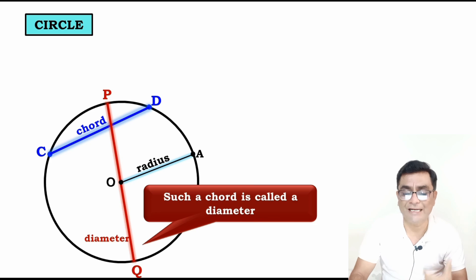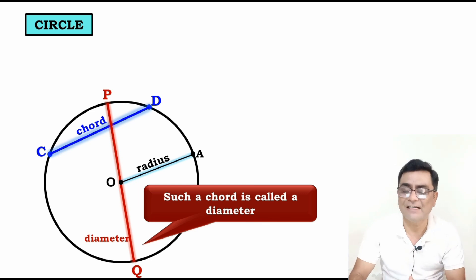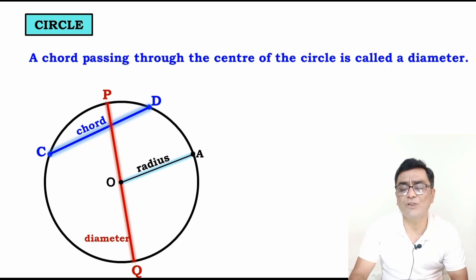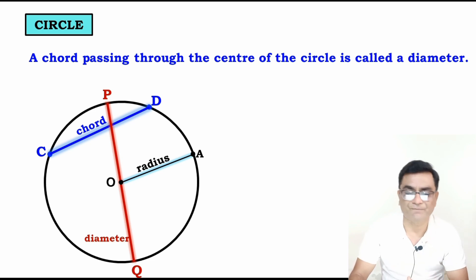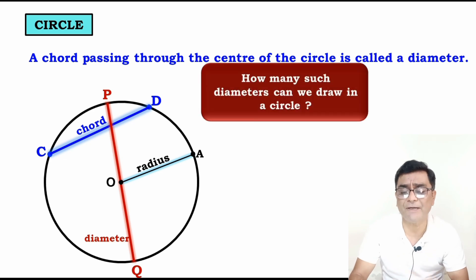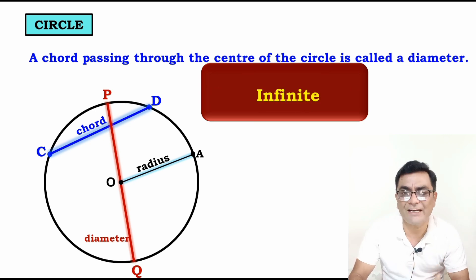PQ is a diameter because PQ is passing through the center. A chord passing through the center of the circle is called a diameter. How many diameters can we draw in a circle? The answer is infinite.